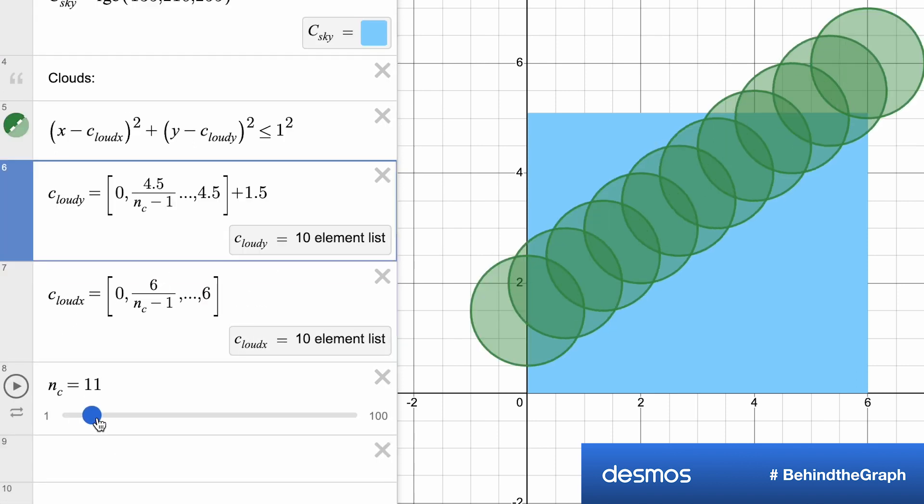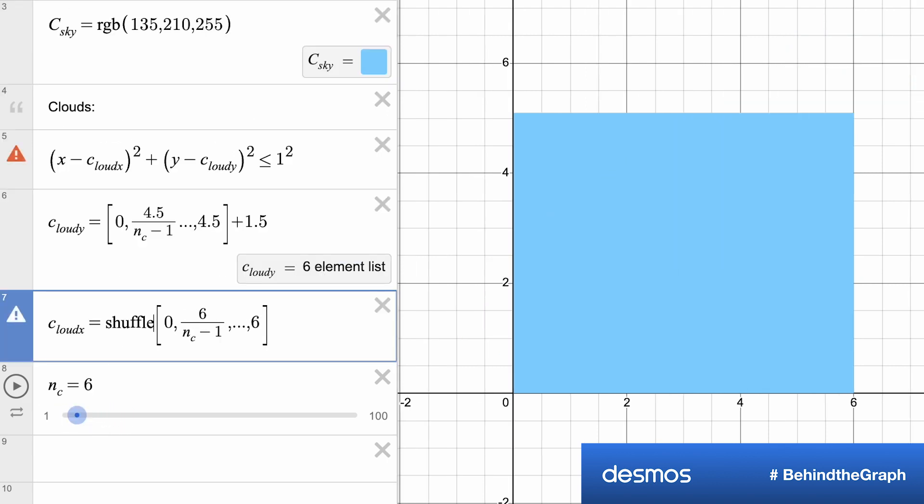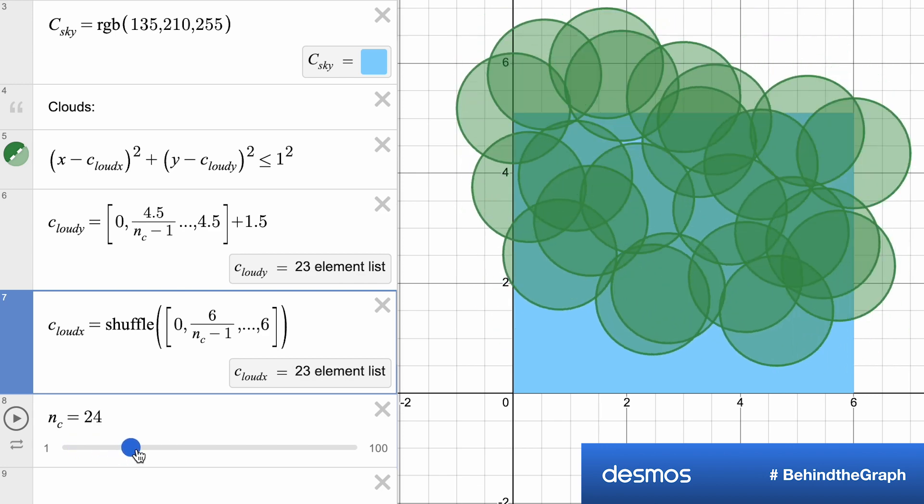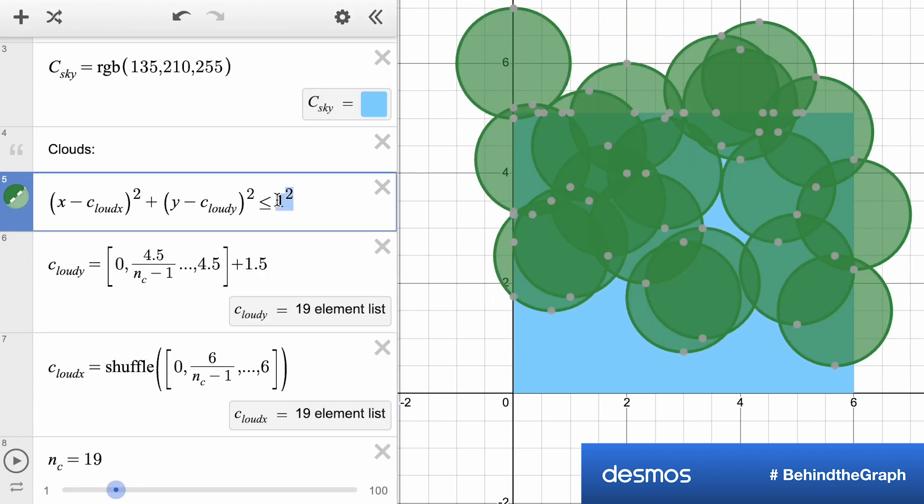but we don't want those necessarily just along that diagonal. We want them all shuffled around. So this is where introducing the shuffle function on the X values takes the same X values, but just rearranges their order.